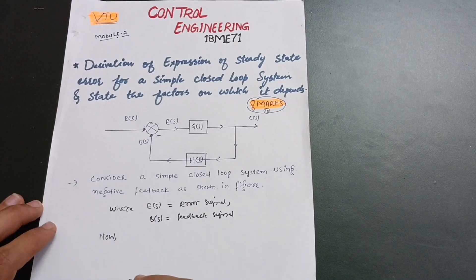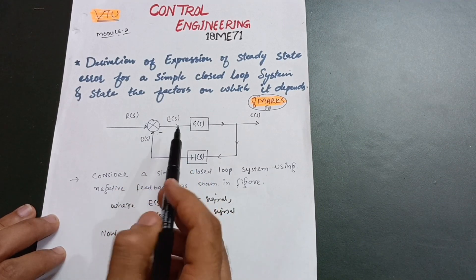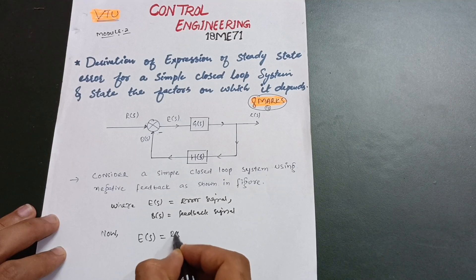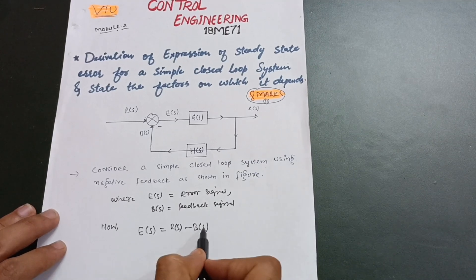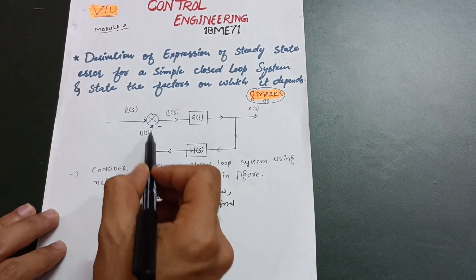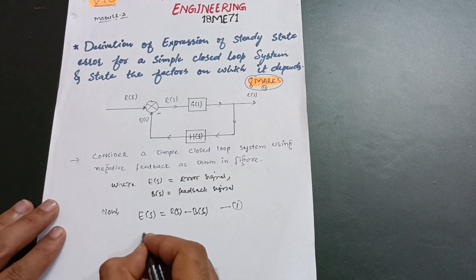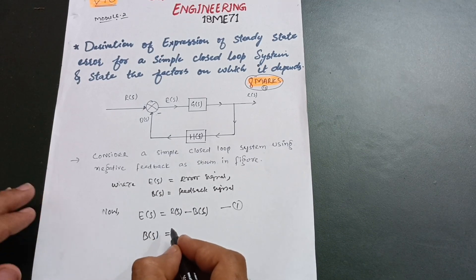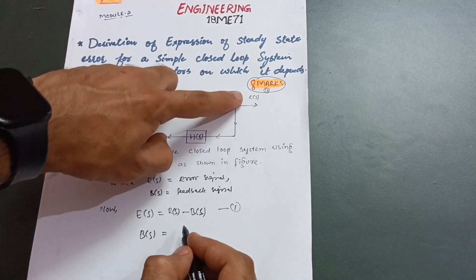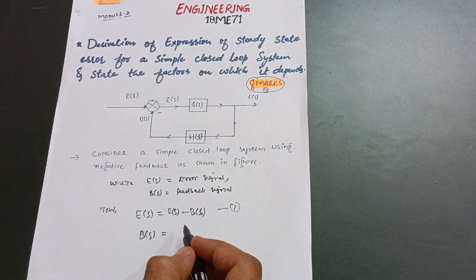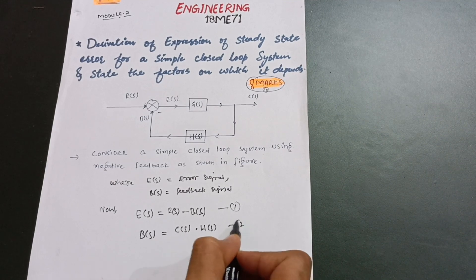Now let me derive this expression. From the figure, E(s) equals the input R(s) which is positive, minus B(s) — the feedback signal. So E(s) = R(s) − B(s) is the first equation. Next, B(s) is the feedback signal, which equals H(s) multiplied by C(s) — since it is connected to C(s). So B(s) = C(s)·H(s) is the second equation.